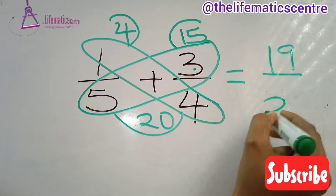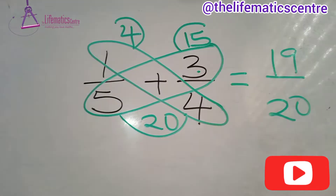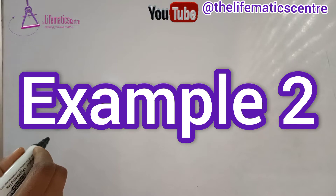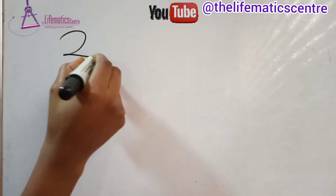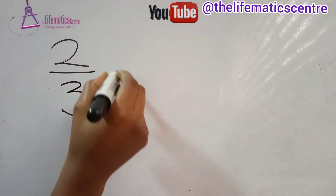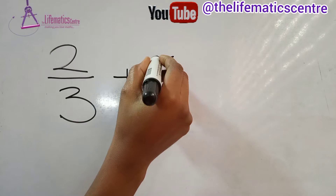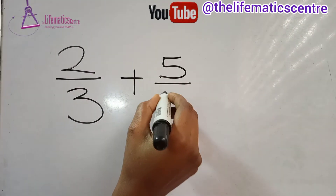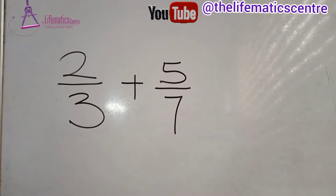You see, we arrived at our answer without any special LCM calculation. All right, let's try another example: 2 over 3 plus 5 over 7. You probably want to pause at this point to try it out.